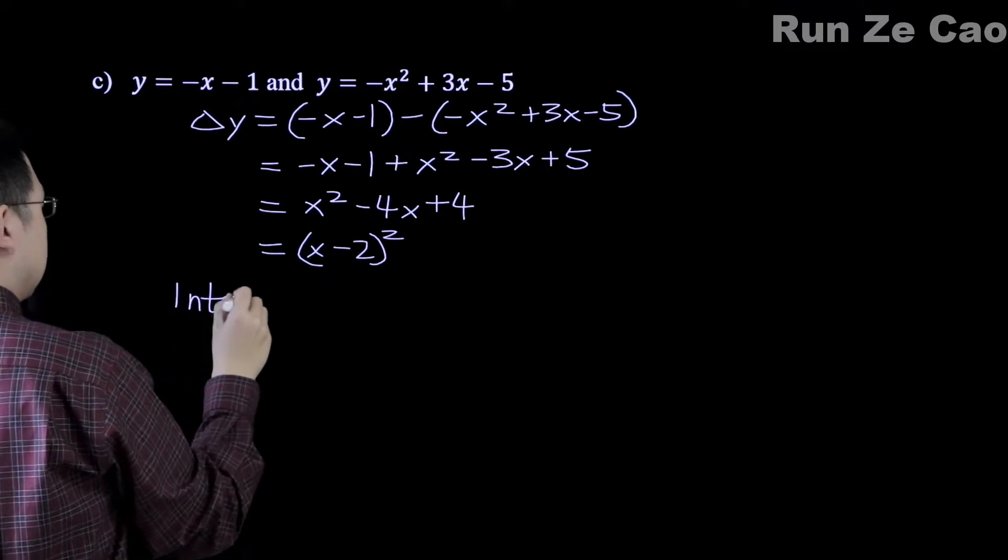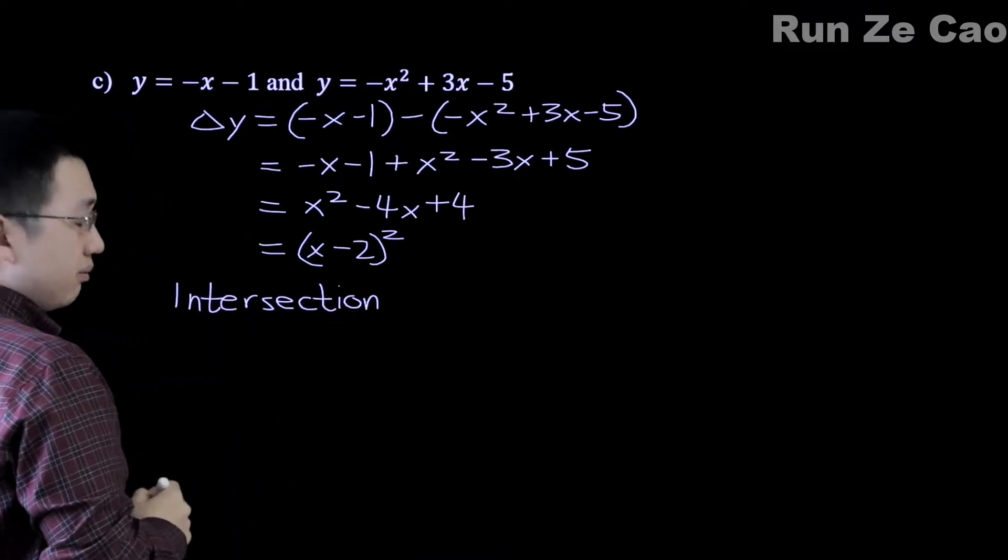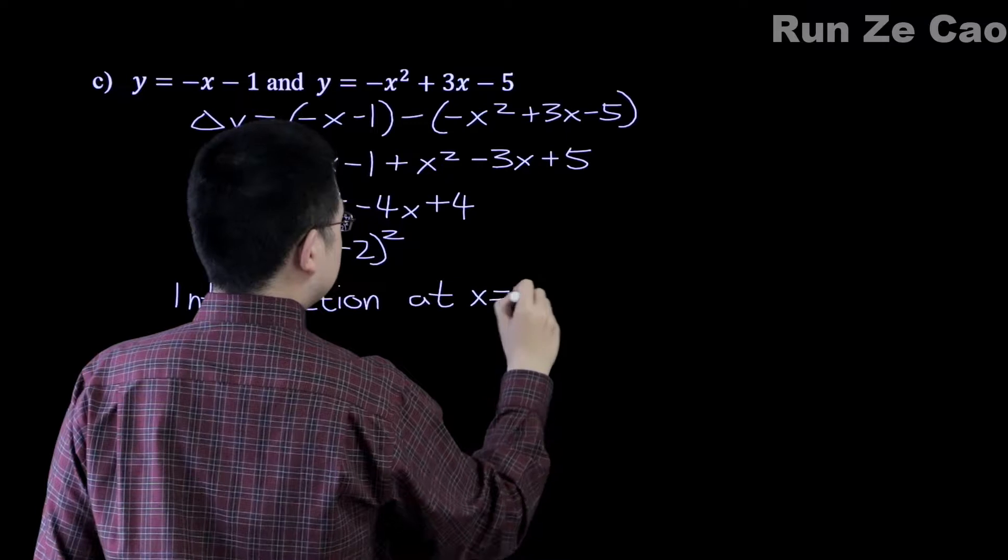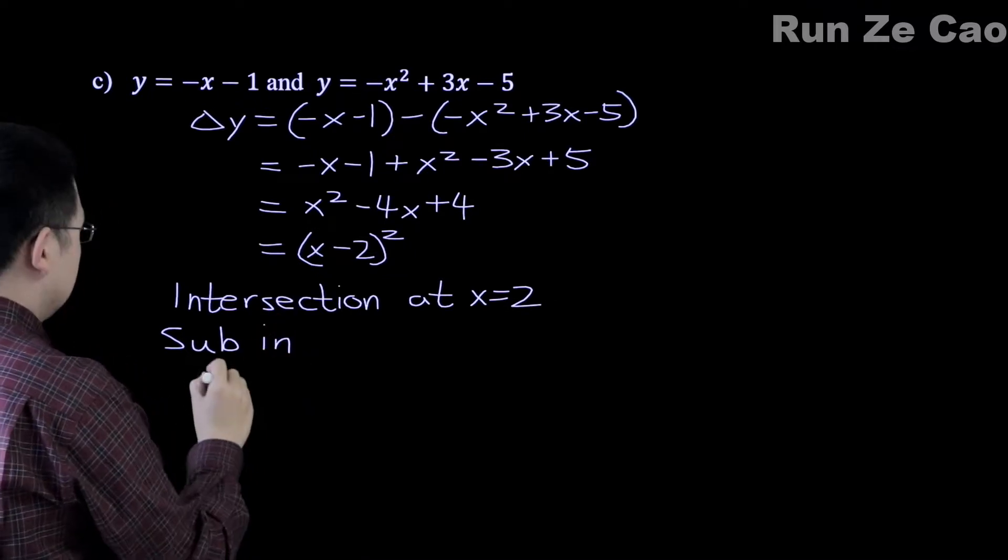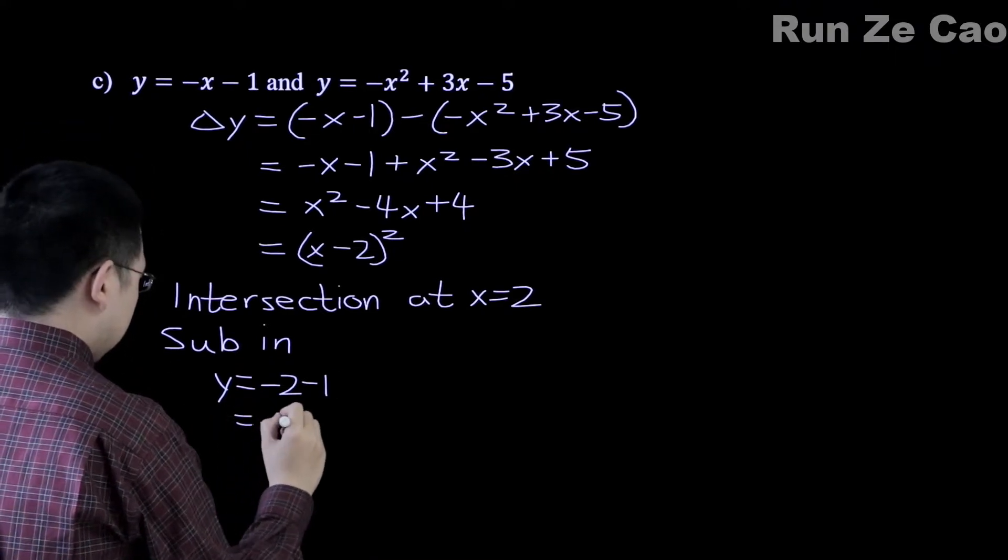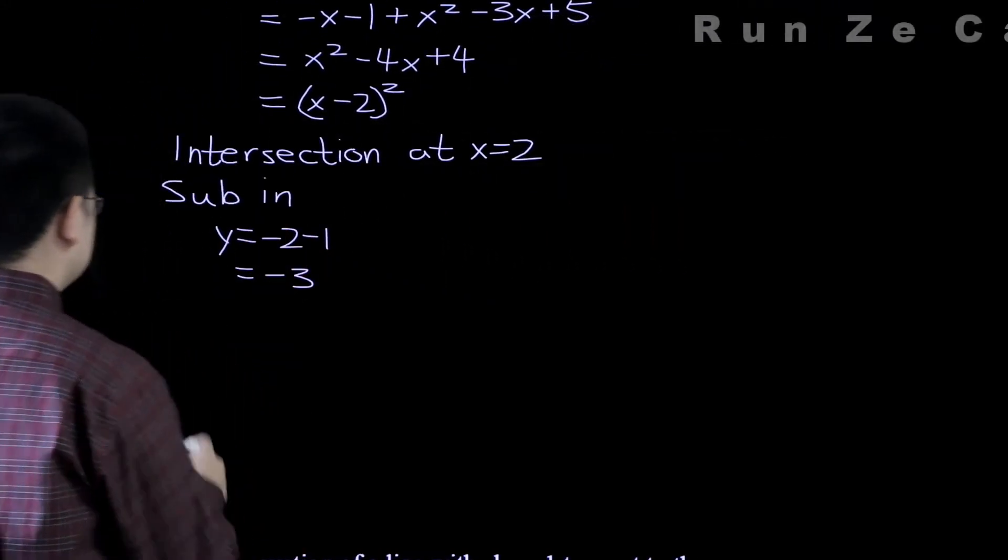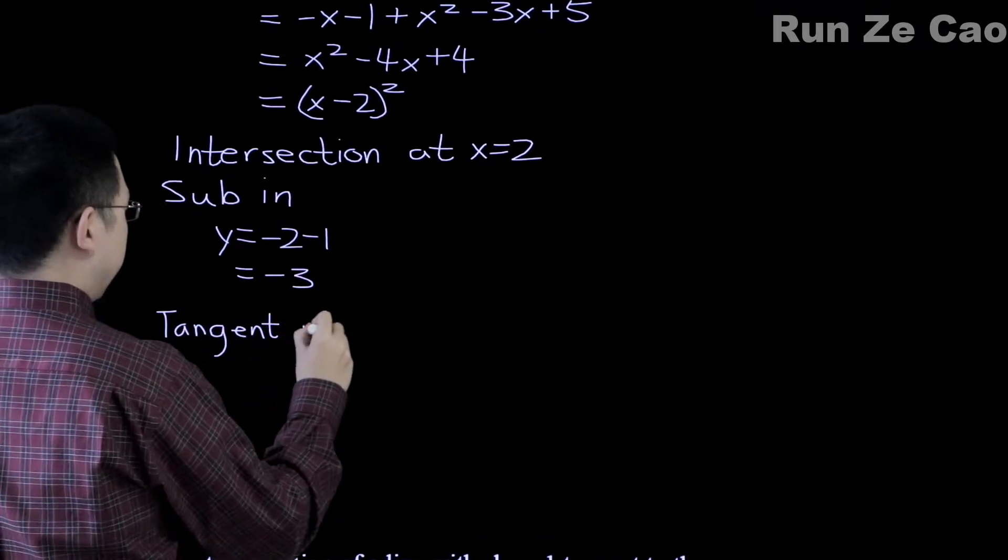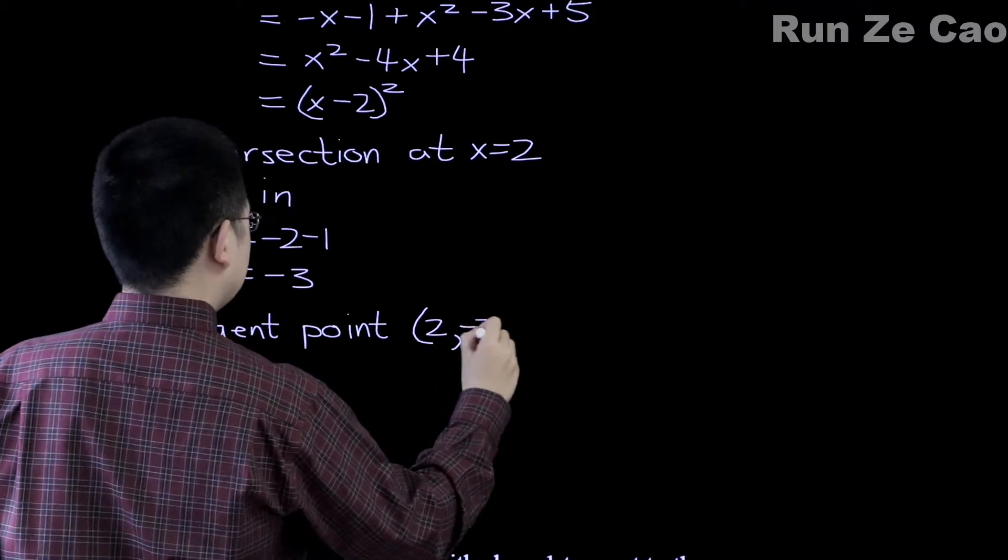So intersection - well, technically speaking we should probably call this tangent, but hey. So sub in: y equals negative 2 minus 1 equals negative 3. So tangent point at 2, negative 3.